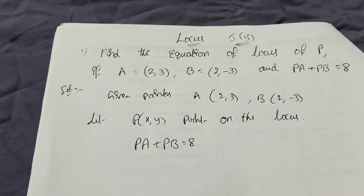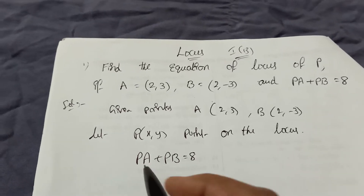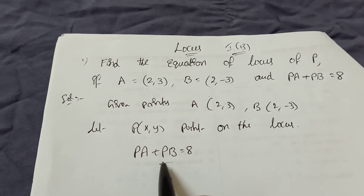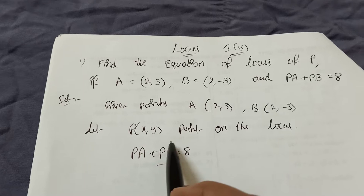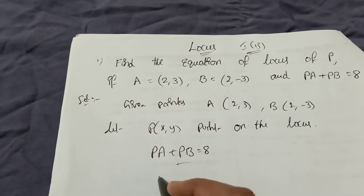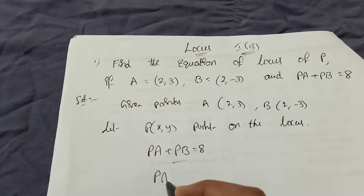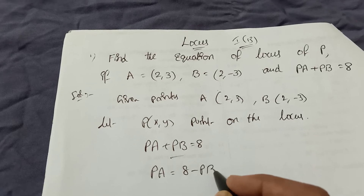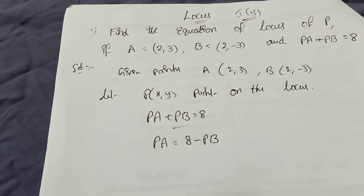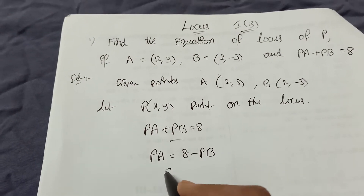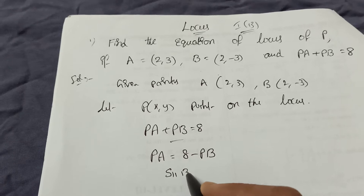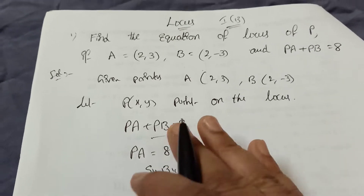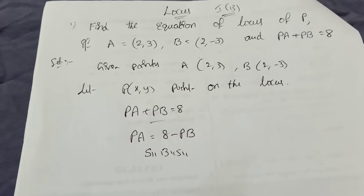Just observe: don't directly do squaring on both sides. First send the PB part to the right-hand side — that is, PA equals 8 minus PB. This is a very important trick. Then do squaring on both sides.